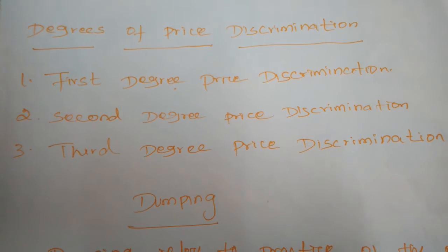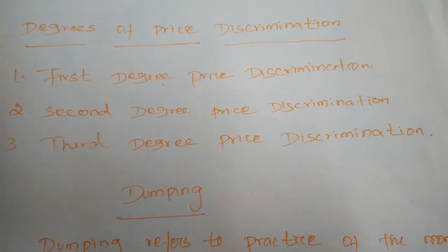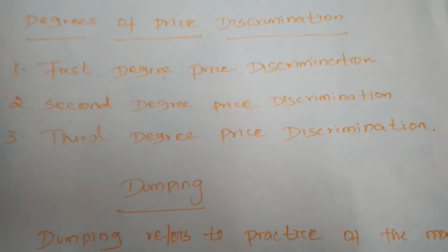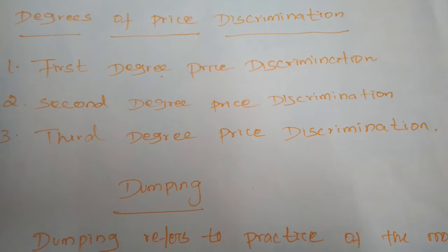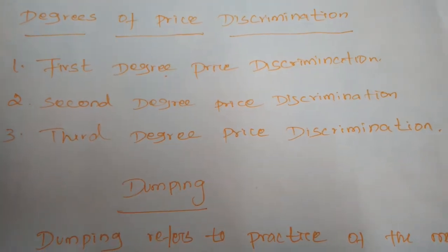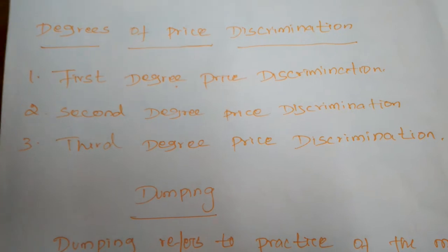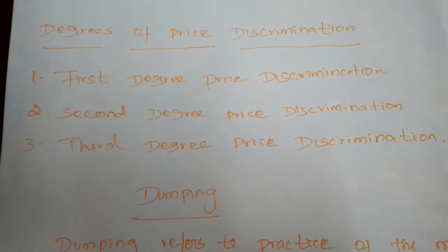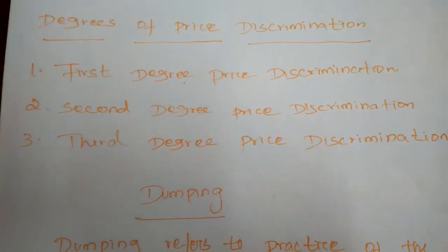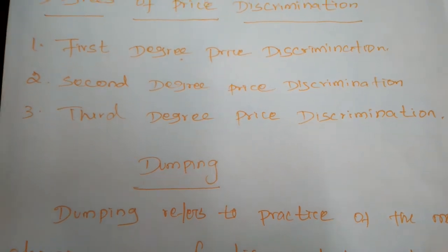John Robinson named this as perfectly discriminating monopoly. Based on demand, availability of the commodity, and the behavior of consumers, the seller fixes the highest price. This is called first degree price discrimination.